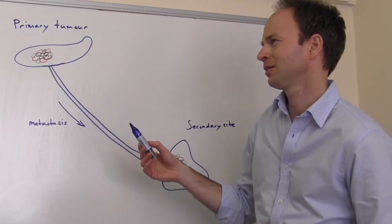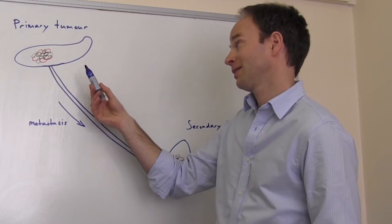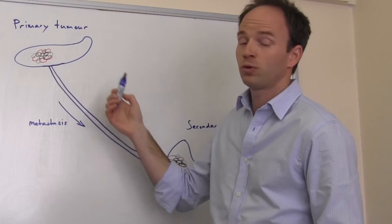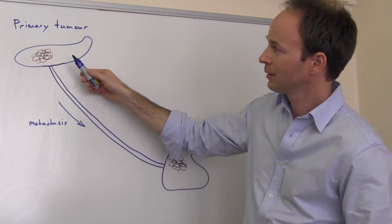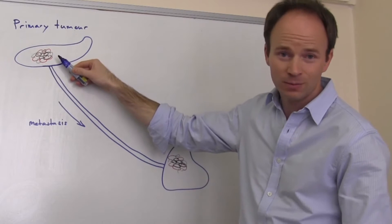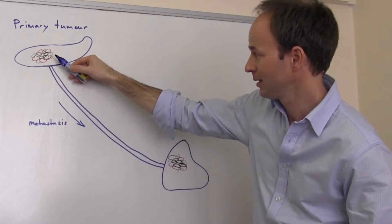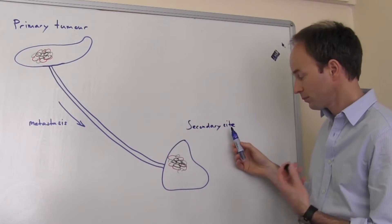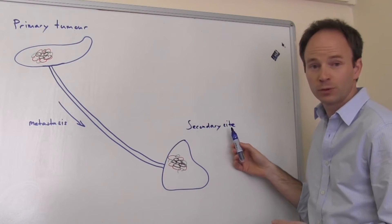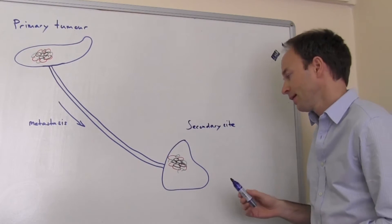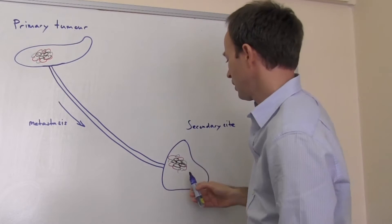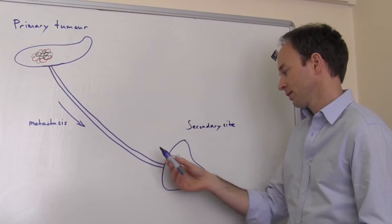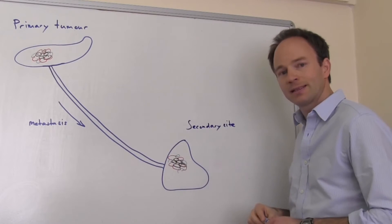Pancreatic cancer is a highly aggressive metastatic disease and has a poor prognosis. The tumor develops at its primary site, which is the pancreas, and then it can spread to a secondary site, which in pancreatic cancer is most often the liver. We were interested in how the tumor microenvironment affects the metastatic spreading of pancreatic cancer.